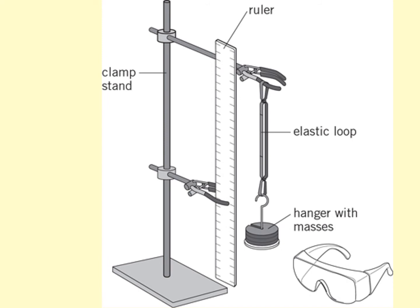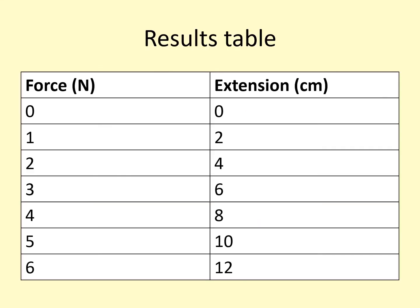If you've been in school, you will have done this practical — it's a really common one and you might get asked about it in exams. We've got a clamp stand holding up an elastic loop, and a hanger with masses on it. The masses cause a force on that elastic loop, and then you can measure the elastic loop with a ruler.